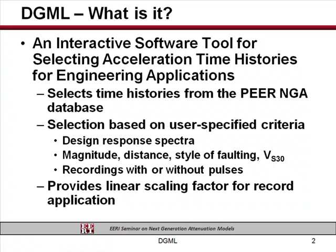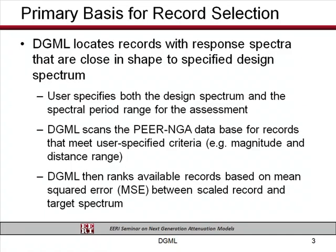The tool also provides a linear scaling process to scale the records to match a target spectrum on average. It does not do spectral matching. It does not do any code checks to whether you're meeting various code criteria — that is left up to the user. It's just a tool to develop a basic starting set of records for the engineer to consider. The primary basis for selection of records is response spectral shape — it looks for acceleration records in the database that have a similar spectral shape to your design spectrum.